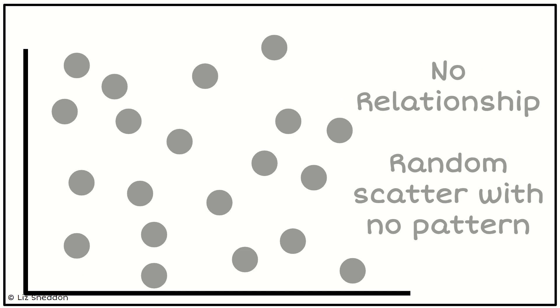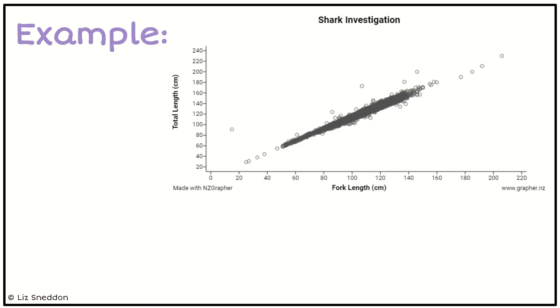There's just a random scattering of data. So let's have a look at this example here. This is looking at sharks and looking at their fork length versus their total length. The fork length is if you think about the shark's tail where it splits off into a fork, into two prongs basically. It's the length from the center of that to the head.